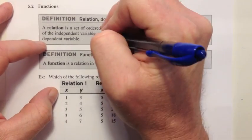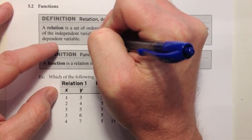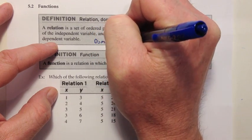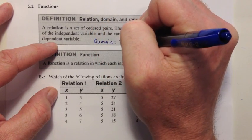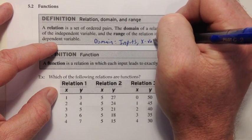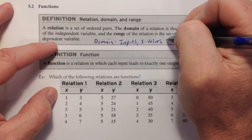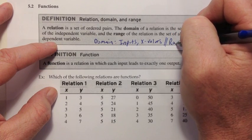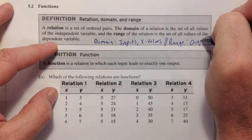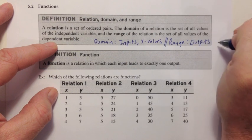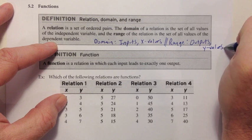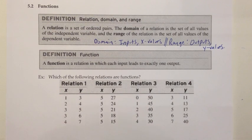Just a reminder: when we talk about the independent variable and the domain, we might also think of it as the inputs — typically that means x values. And when they talk about the range, it's the dependent variable, which means the outputs, or typically the y values. That's another way you can think about it in addition to the book definition.